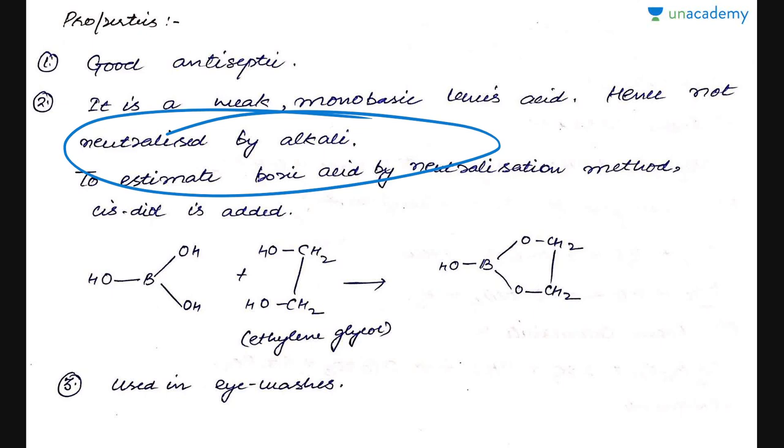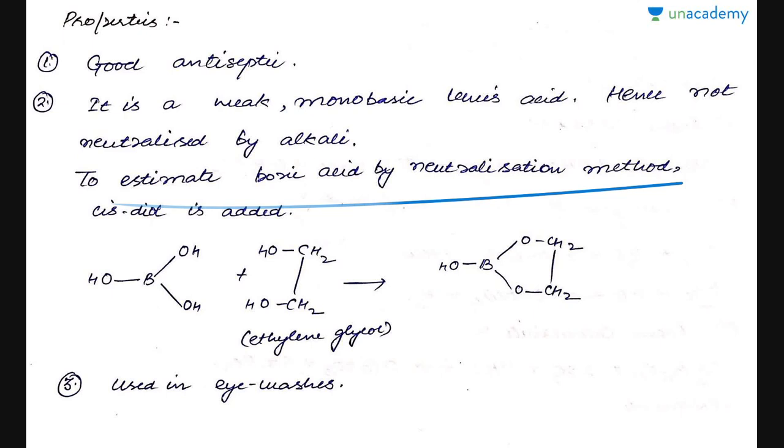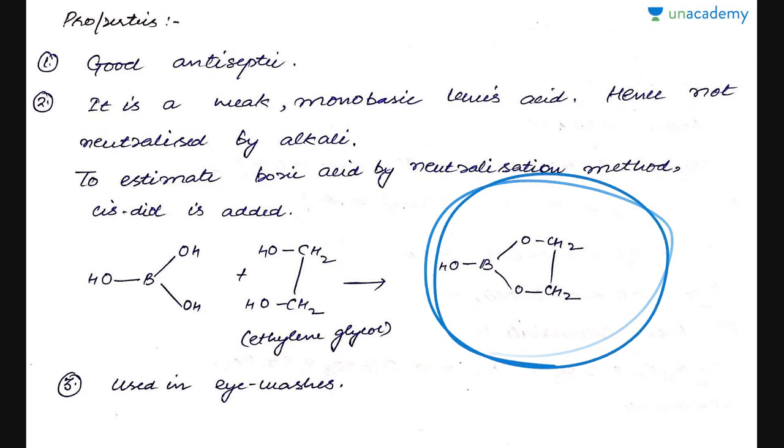In case we have to estimate boric acid by neutralization method, we add cis-diol in practice. Cis-diol consists of two OH groups on adjacent carbons on the same side, also known as vicinal diol, for example ethylene glycol.